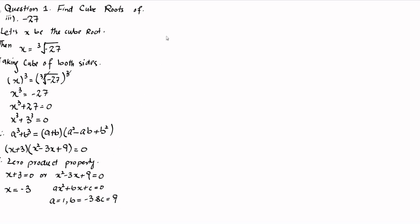We will use the quadratic formula to find the solution of this quadratic equation. The quadratic formula is x is equal to minus b plus or minus square root of b squared minus 4ac, divided by 2a. Now we insert the values of a, b, and c.